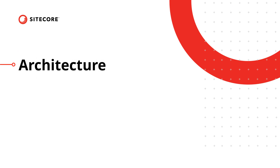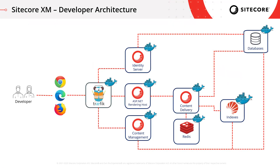Let's start off by taking a quick look at the target architecture we're going to be creating. In this example, we're going to be working with a typical Sitecore 10 XM deployment. If you take a look at this diagram, you can see that this will involve eight different containers that come together to provide each of the different application elements required. Each of these containers that you create will be based on an image.